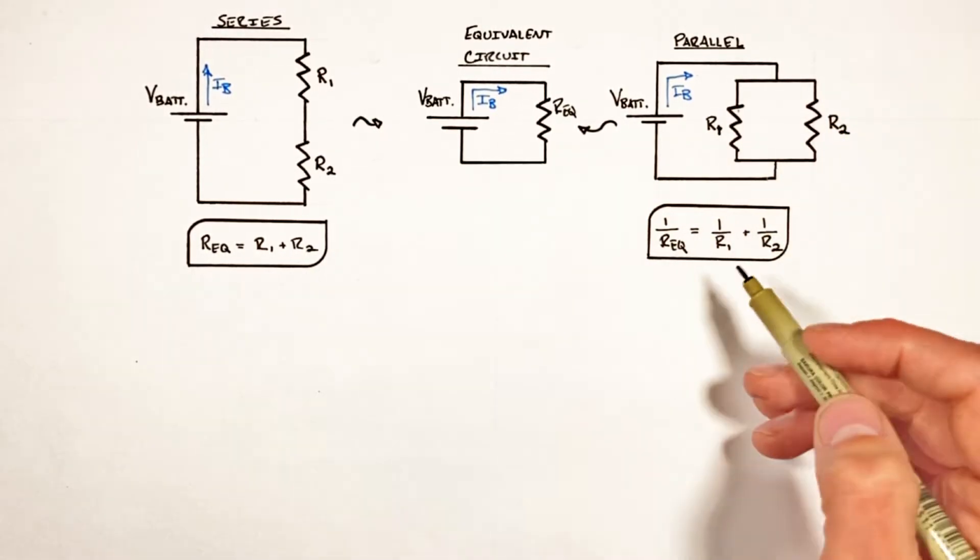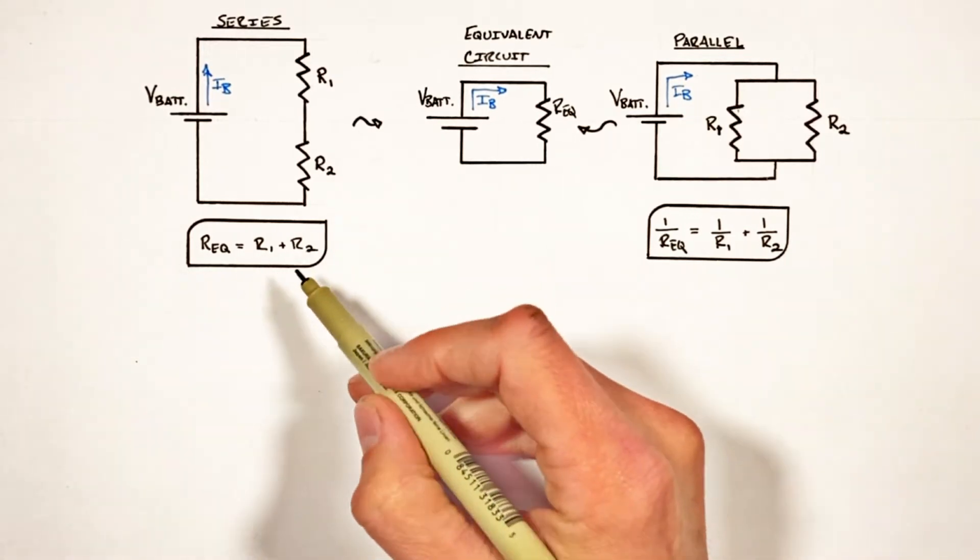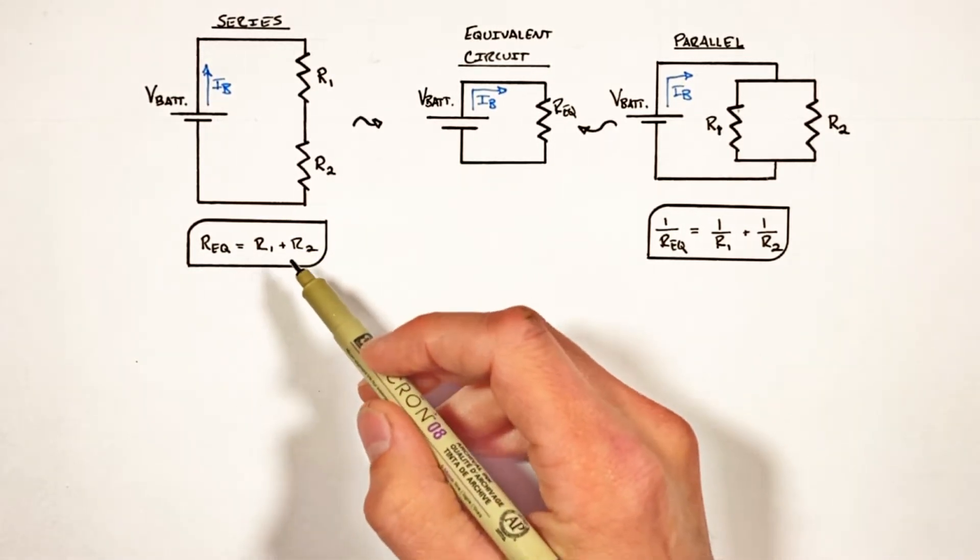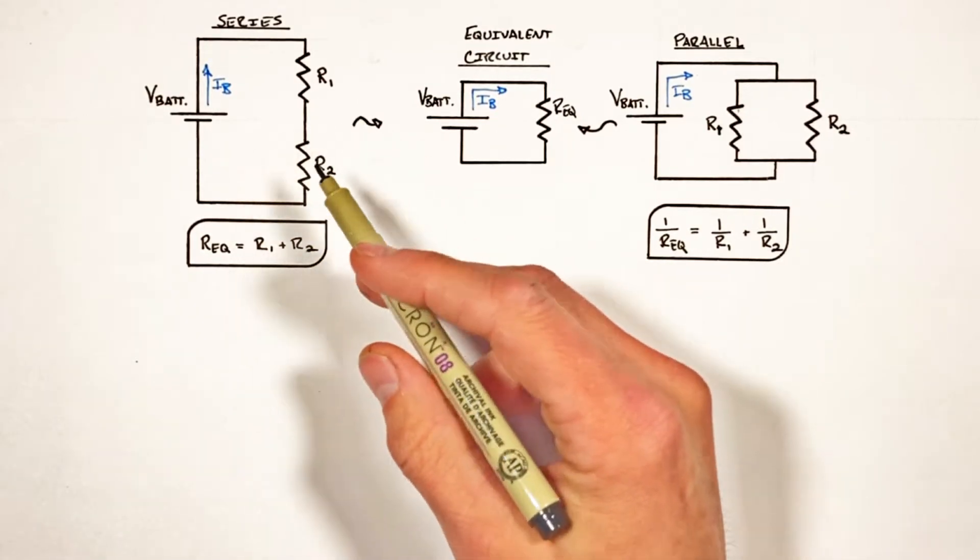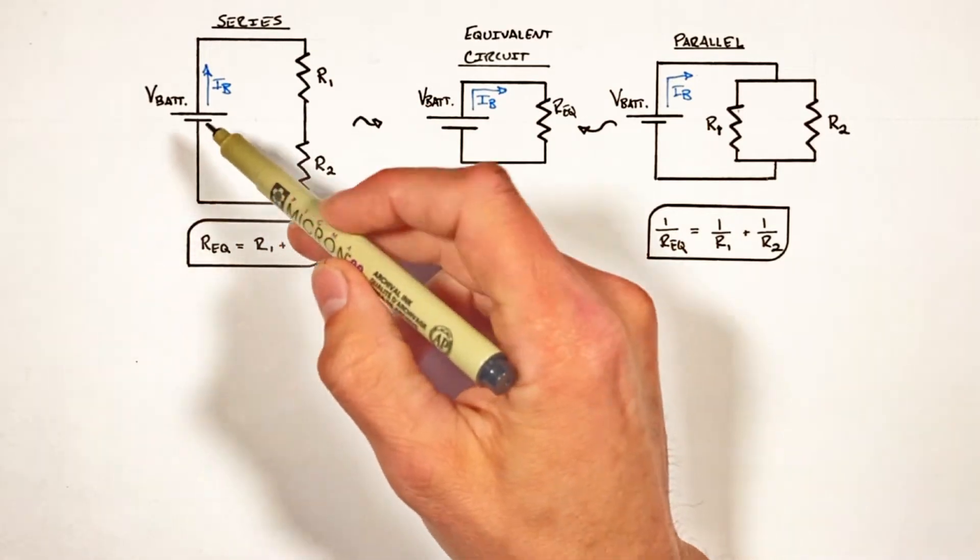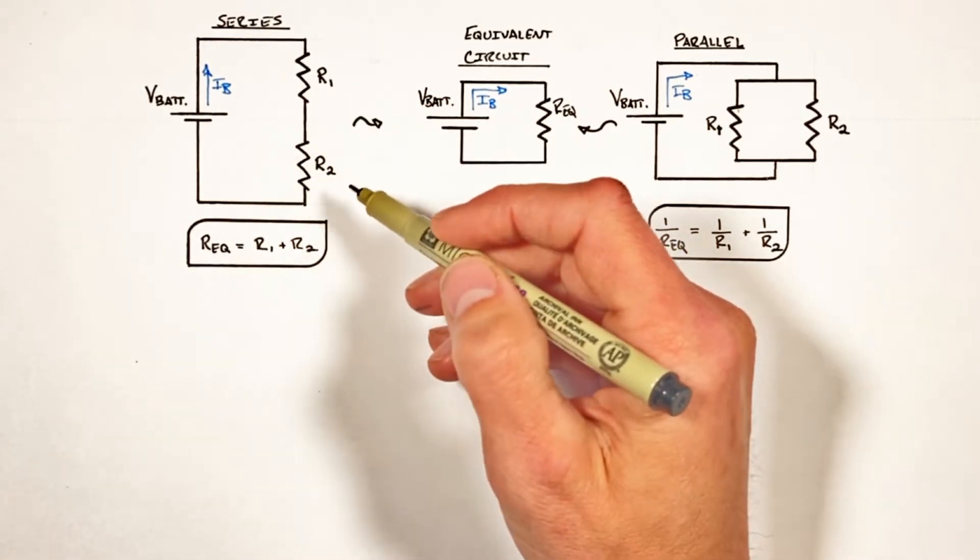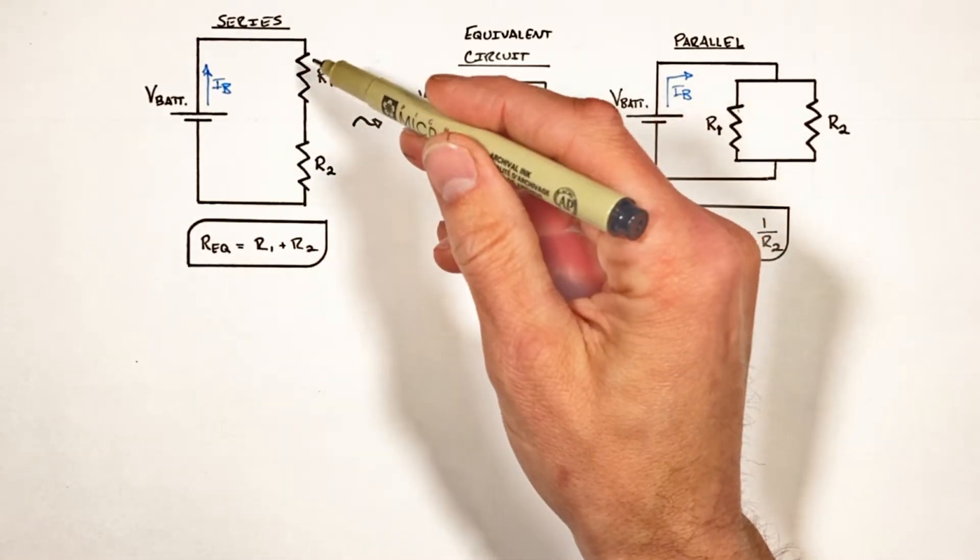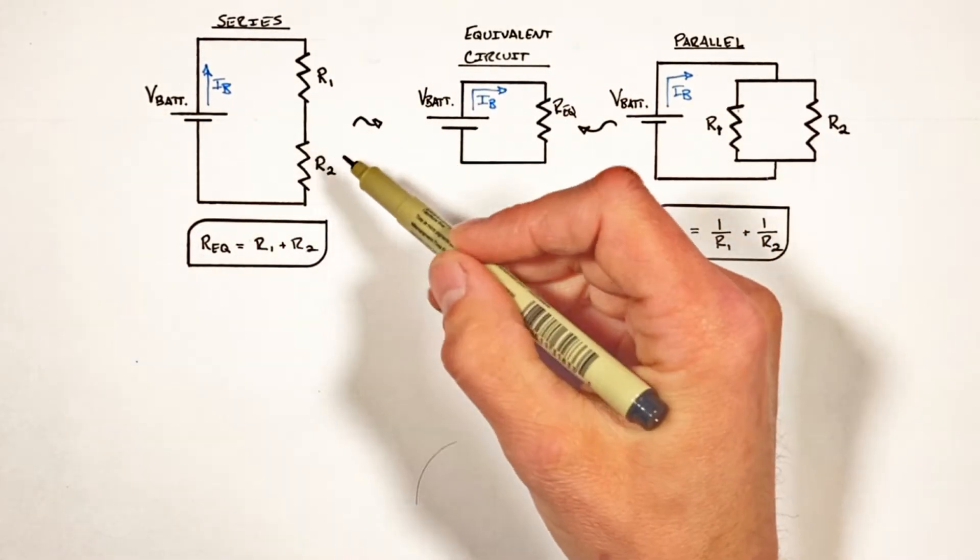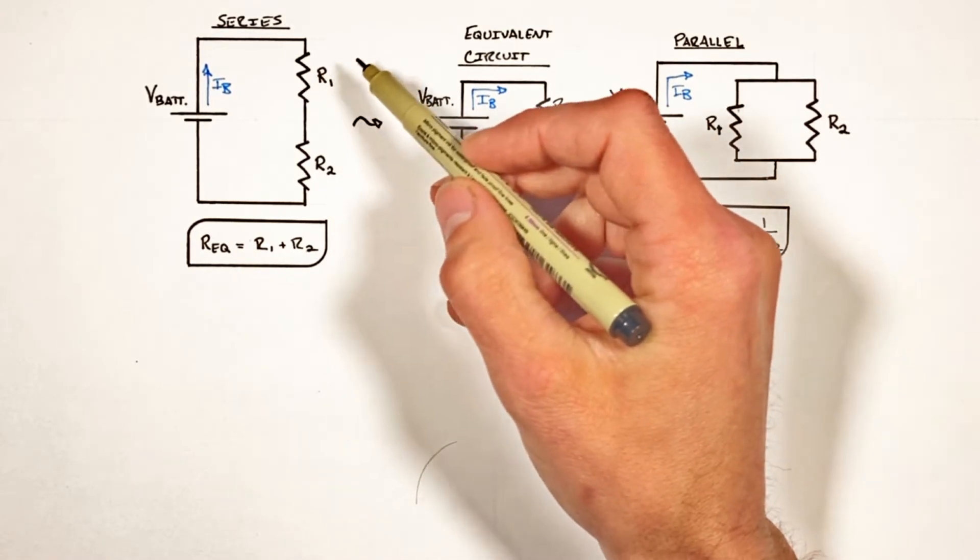So let me show you where each of these equations come from, starting over here with our resistors in series. The first thing we've got to get out of the way, and I can't make a big enough deal out of this, is Ohm's law always applies to every individual component within a circuit.